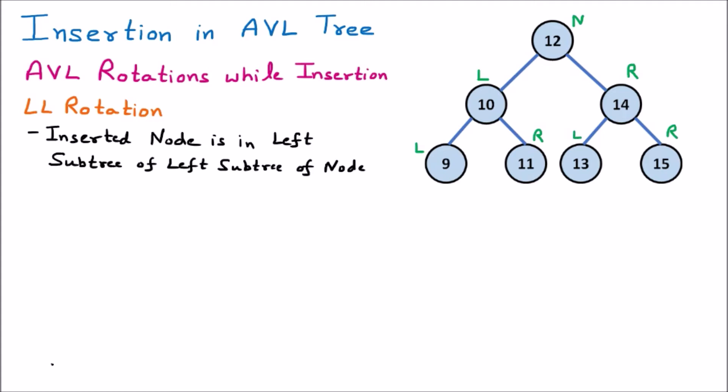For LL rotation, the inserted node is in the left subtree of the left subtree. So if this is a node, and we insert a node at the left of its left subtree — at this position or this position — that is called left-of-left insertion. If the tree becomes unbalanced because of that, then LL rotation is applied.